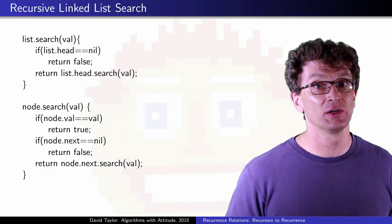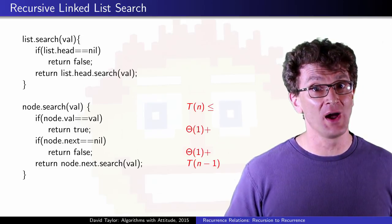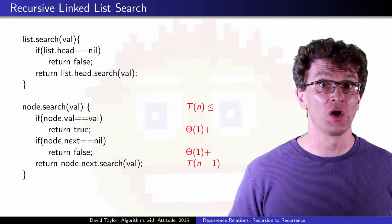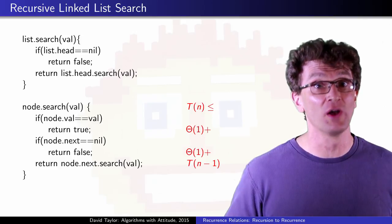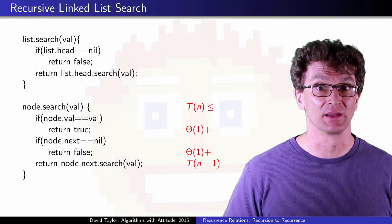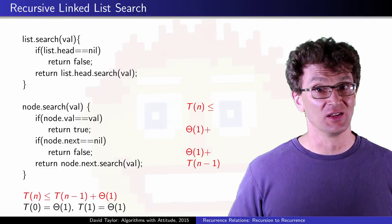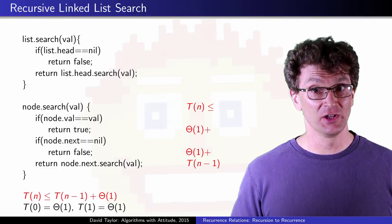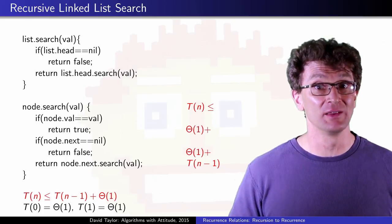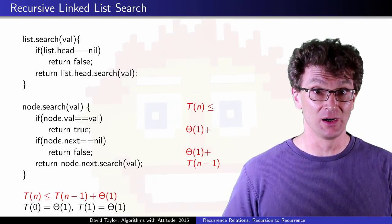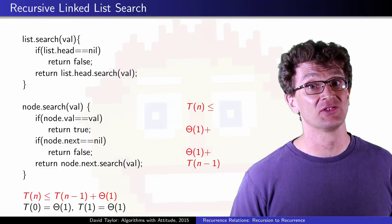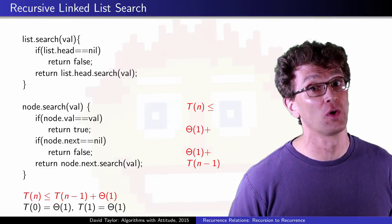The check at the current location takes constant time, and then if we don't find the value, we have a recursive call to the next item in the list, which has one fewer items in its remaining list. This gives us another recurrence relation. Notice the less than or equal sign here. For this program, if you find the value, you just stop there and there wouldn't be any more recursive calls. Here, we can only say this program has a constant time for its lower bound.